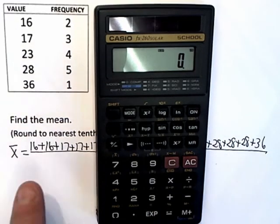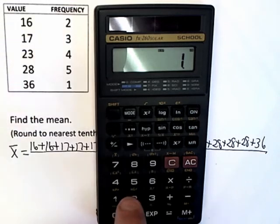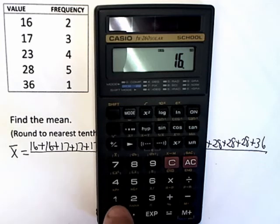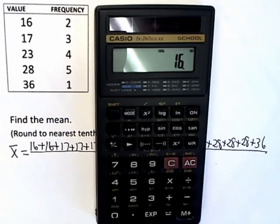Now you enter each one of those numbers. I want to enter 16 twice. So I enter 16, M plus puts it in, and then 16 again, M plus puts it in.